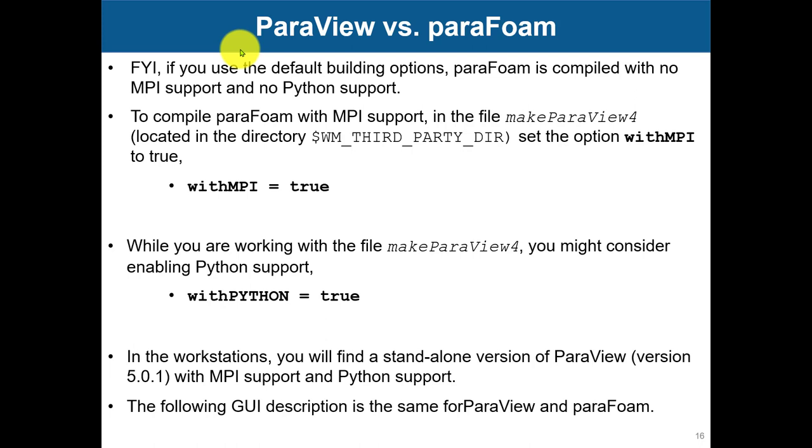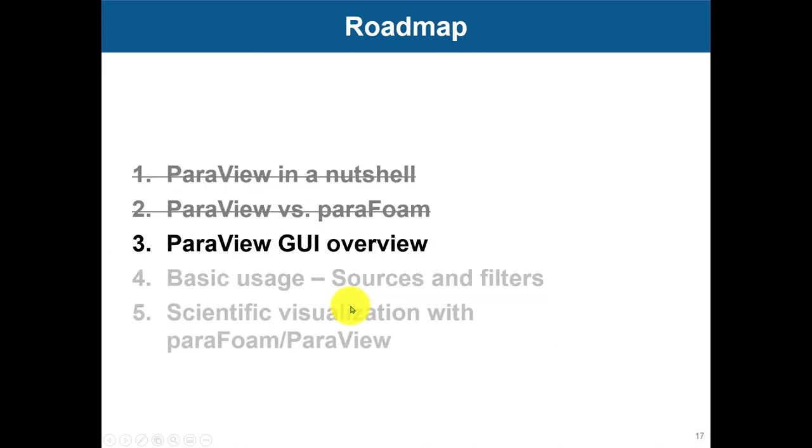Next, if you decide to use ParaView with the standard compilation, you will have it without the MPI edition, without the Python that sometimes can be really helpful if you want to do things parametrically. That is another good reason just to use the pre-compiled binaries where everything already is enabled, or the one you can compile when you enable these options.